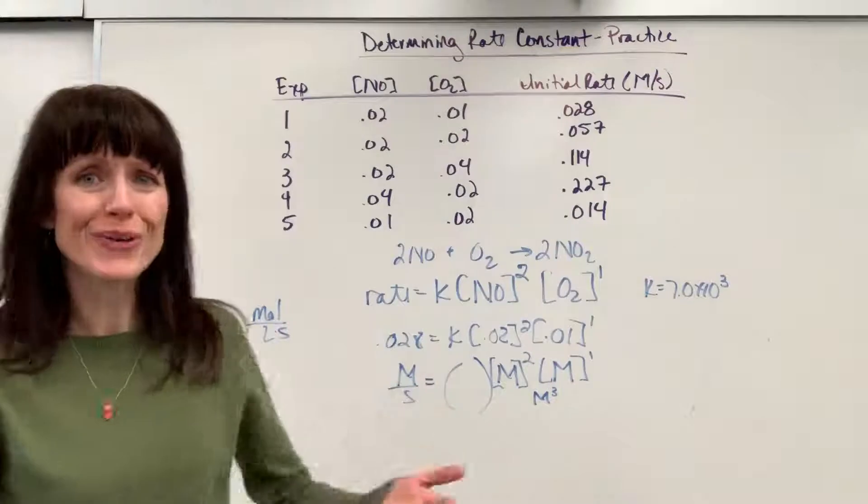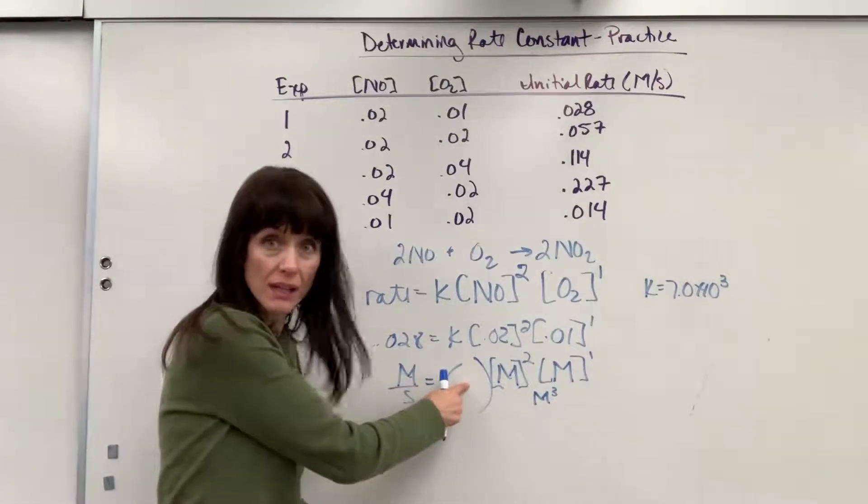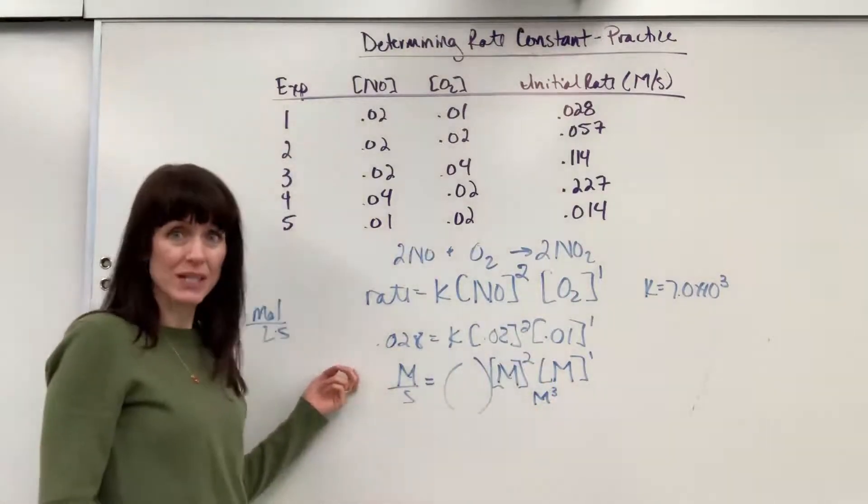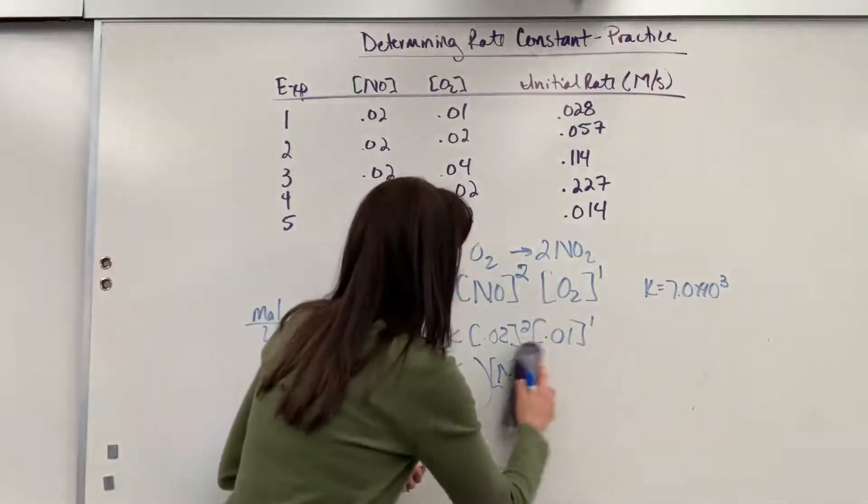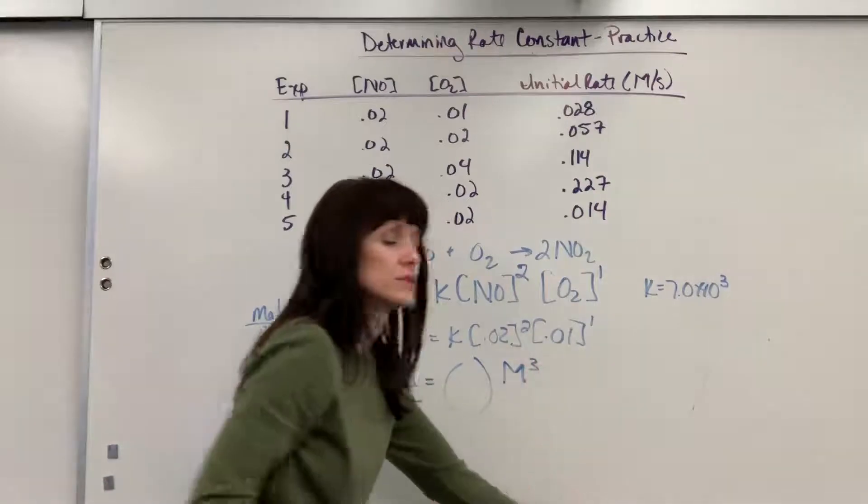So here's the big question. What do I have to put right here for the unit on K? Then when I multiply it by molarity cubed, I end up with molarity per second. I'm going to rewrite this so you can see it just a little bit cleaner. This would become molarity cubed like that.